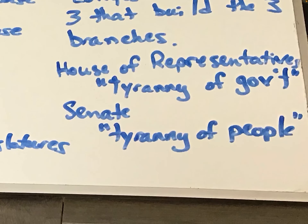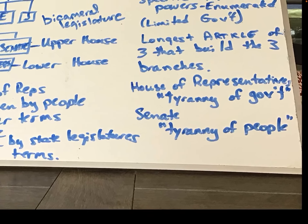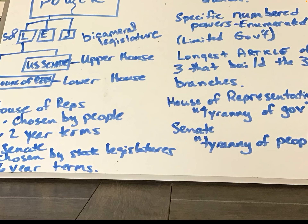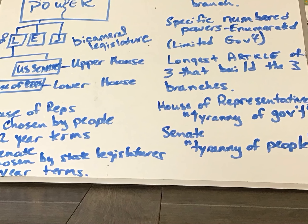The House of Representatives, with its two-year terms, is meant to be a response to tyranny of government. If the government is making bad decisions, the people have the power to replace their House of Representatives members — to slow down the actions being taken or to undo them.